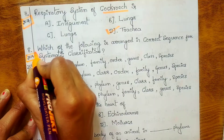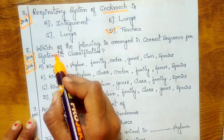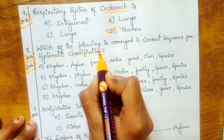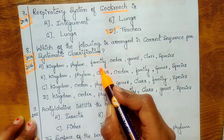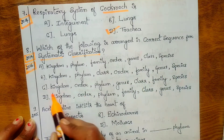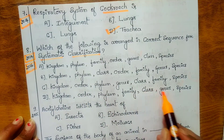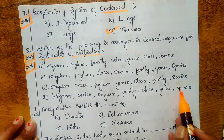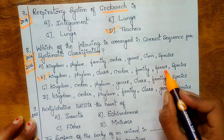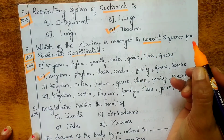Eighth question, from 2014, also repeated in 2016: which of the following is arranged in the correct sequence for systematic classification? Option A: Kingdom, Phylum, Family, Order, Genus, Class, Species. Option B: Kingdom, Phylum, Class, Order, Family, Genus, Species. Option C: Kingdom, Order, Phylum, Genus, Class, Family, Species. Option D: Kingdom, Order, Phylum, Family, Class, Genus, Species. The answer is B — Kingdom, Phylum, Class, Order, Family, Genus, Species. That is the correct sequence of systematic classification.